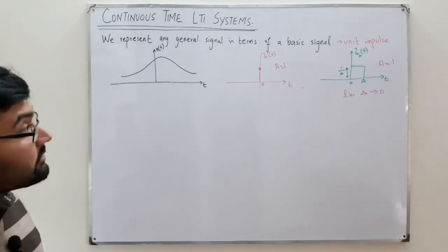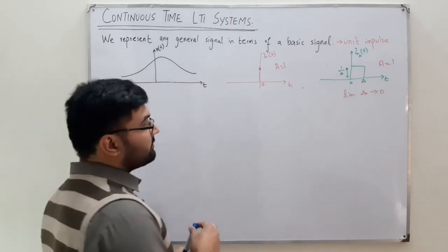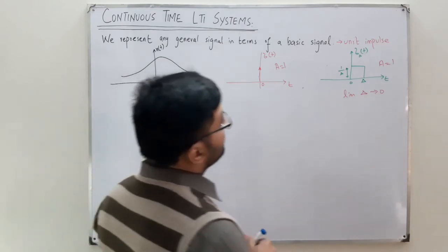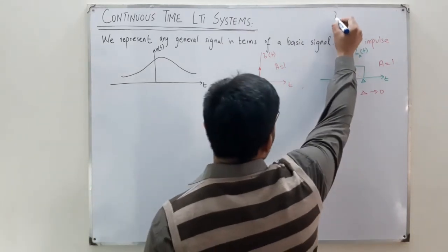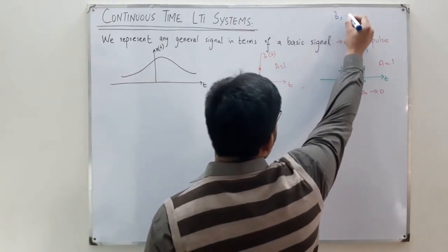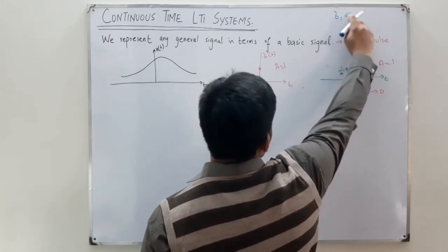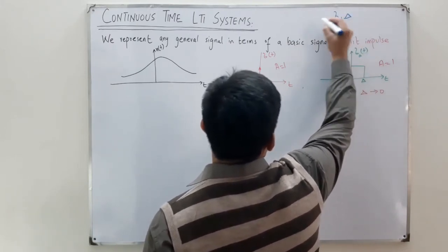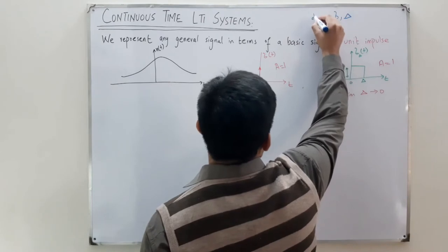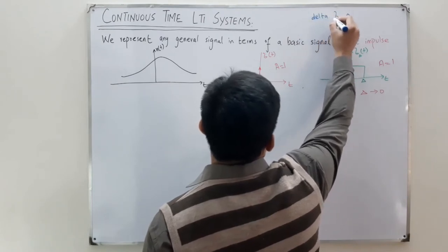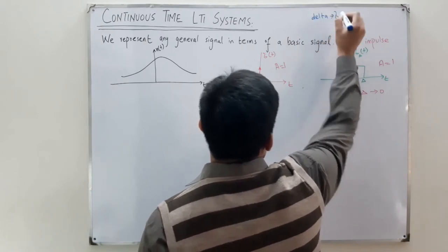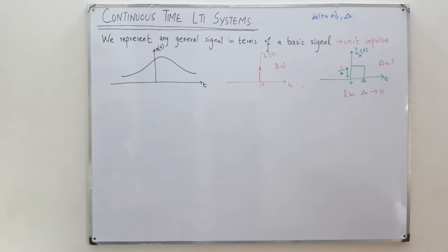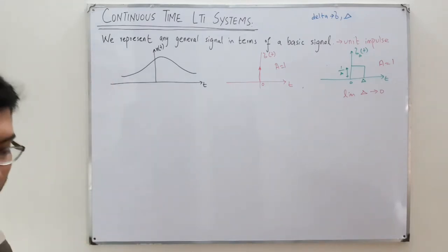Some people are confused about delta. This interval delta and the impulse delta(t) are both called delta — these both are deltas. Coming to representing the signal in terms of a delta function.